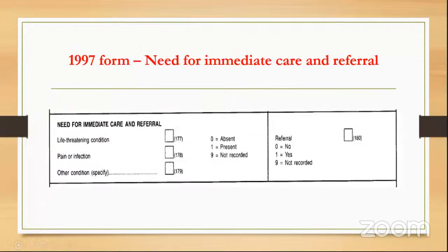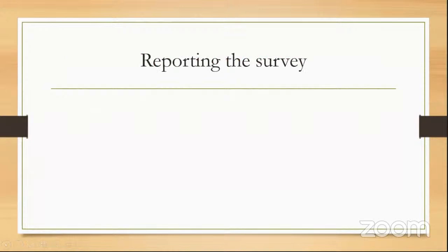In the 1997 form, intervention coding was based on whether it was a life-threatening condition or involved pain or infection, which did not work out well and was subsequently changed. The form's coding overall is not difficult to memorize since most codes are provided directly in the form. By this point, almost all major dental diseases have been covered.